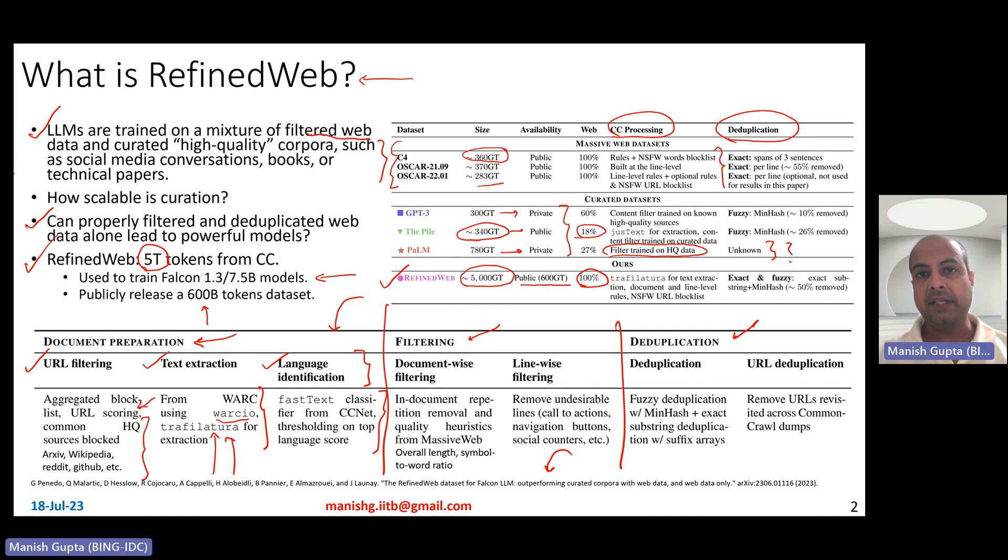The other two steps in preprocessing are filtering and deduplication. As part of filtering, they did document-wise filtering and line-wise filtering. Document-wise filtering basically means you try to get rid of those parts of the documents where the in-document repetition is very high. Also, you try to use quality heuristics like remove those documents which are too short or too long. Also, remove those lines or those documents where the symbol-to-word ratio is very high. Line-wise filtering basically uses line-wise heuristics. For example, you remove undesirable lines like call-to-actions, navigation buttons, lines with very small number of words or very large number of words, lines related to social counters like three likes and so on.